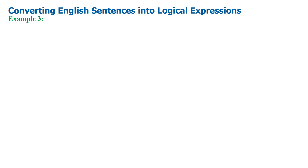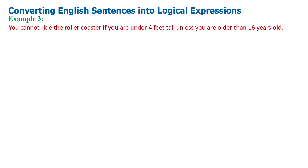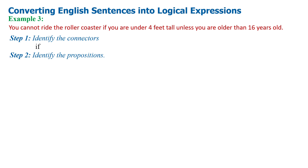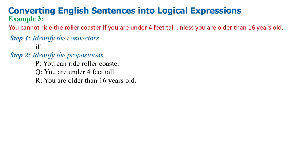Example 3: You cannot ride the roller coaster if you are under 4 feet tall unless you are older than 16 years old. Step 1 — identify the connectors: IF is the connector. Step 2 — identify the propositions: Proposition P is 'you can ride the roller coaster'; Proposition Q is 'you are under 4 feet tall'; Proposition R is 'you are older than 16 years old'.